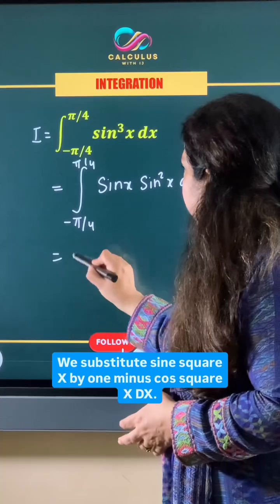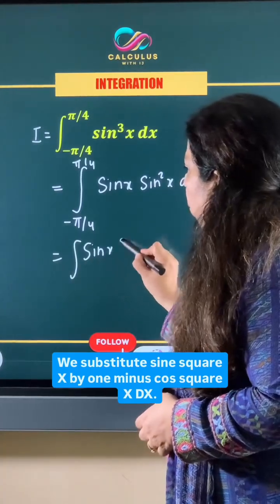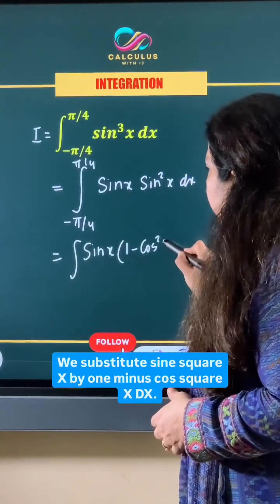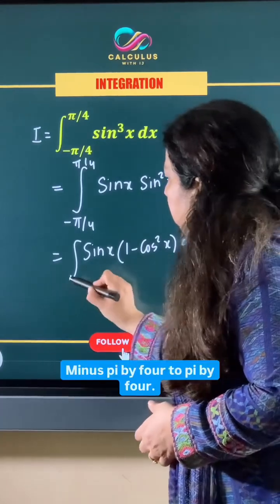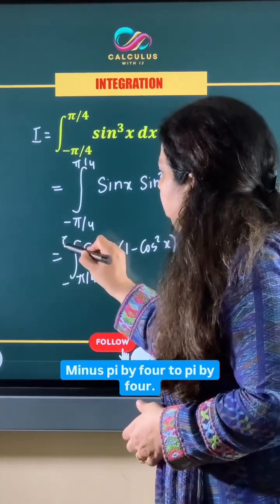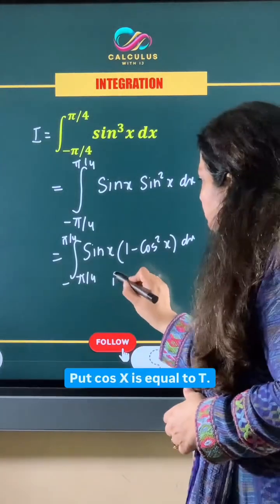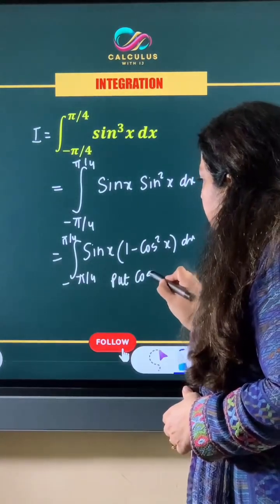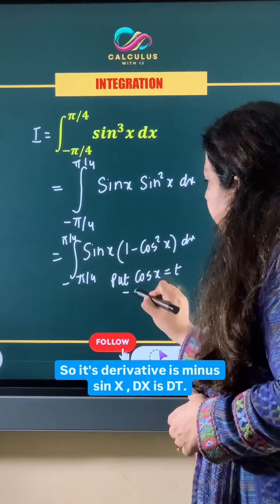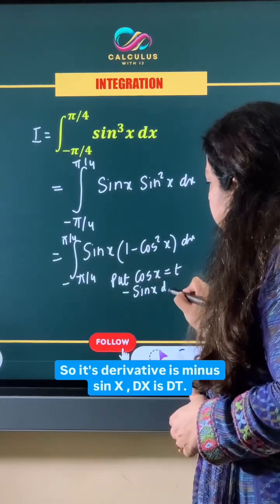So we substitute sine square x by 1 minus cos square x dx with limits minus pi by 4 to pi by 4. Now we use substitution: put cos x is equal to t, so its derivative is minus sine x dx is dt.